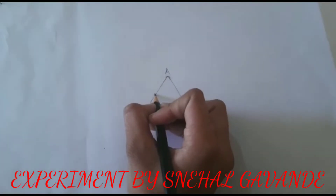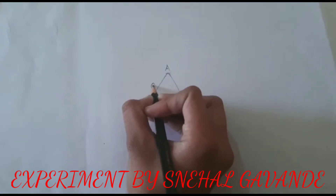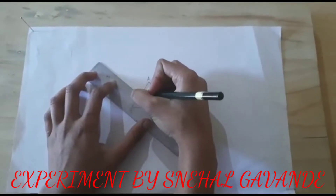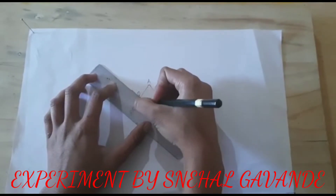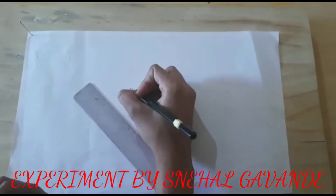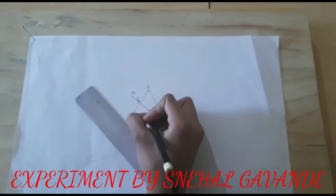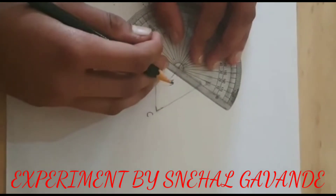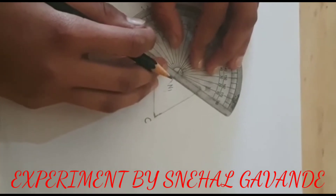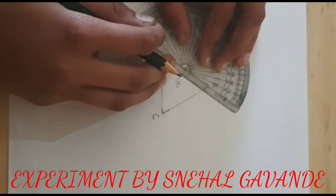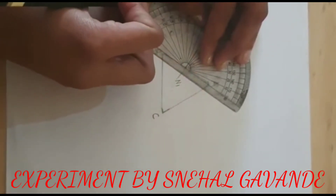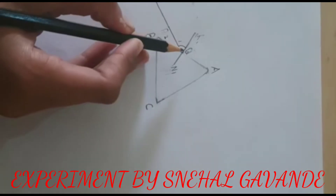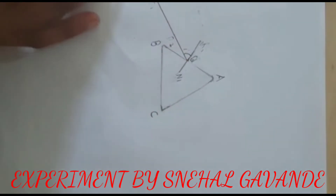I choose this point of incidence and I will draw normal M1 and N1 at point Q. Then I will draw PQ which makes an angle of incidence of 30 degrees with normal M1 and N1. Now this will be the normal and this is the incidence ray.